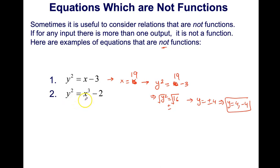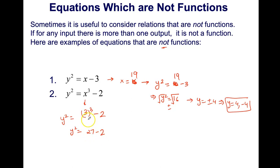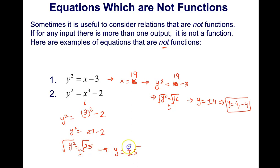Let's check the next example. Taking x equal to 3 in y squared equals x cubed minus 2, we get y squared equals 3 cubed minus 2, which is 27 minus 2 equals 25. Taking the radical on both sides gives y equals plus or minus 5 — two values of y. This does not satisfy the definition of a function, so this is not a function.